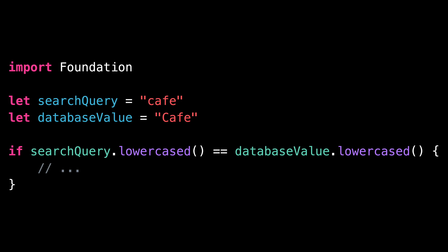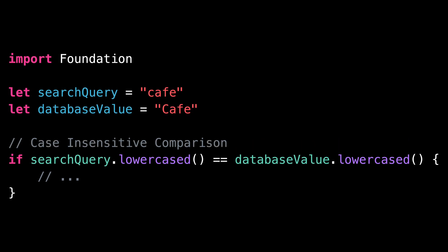Can you guess what's wrong with this code? We are taking a search query that the user has typed and comparing it to a value from a database. And since we want to make the search case insensitive, we make both strings lowercase. But while it's a very good idea for the user experience to make the search case insensitive, this code is not the best way to implement it.